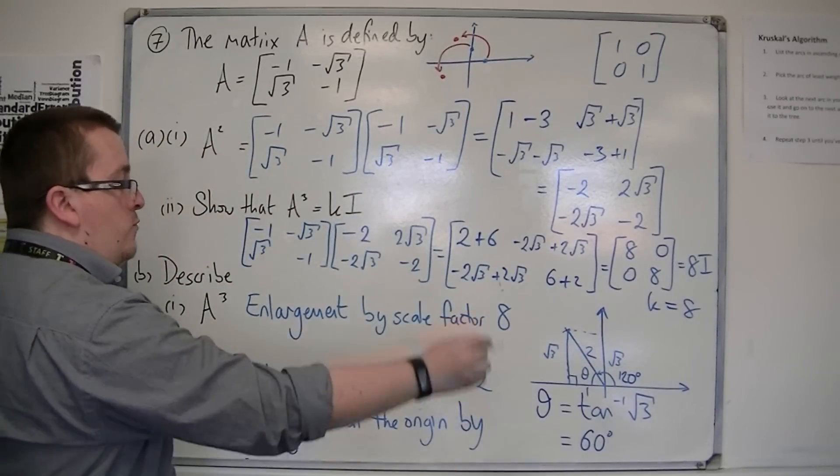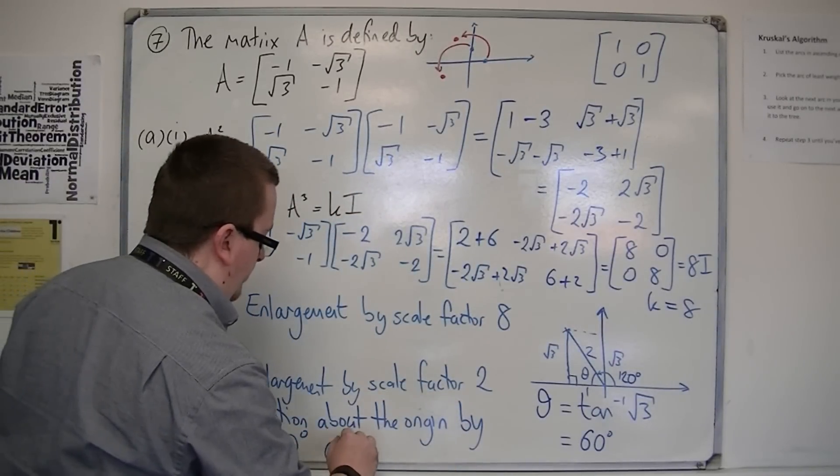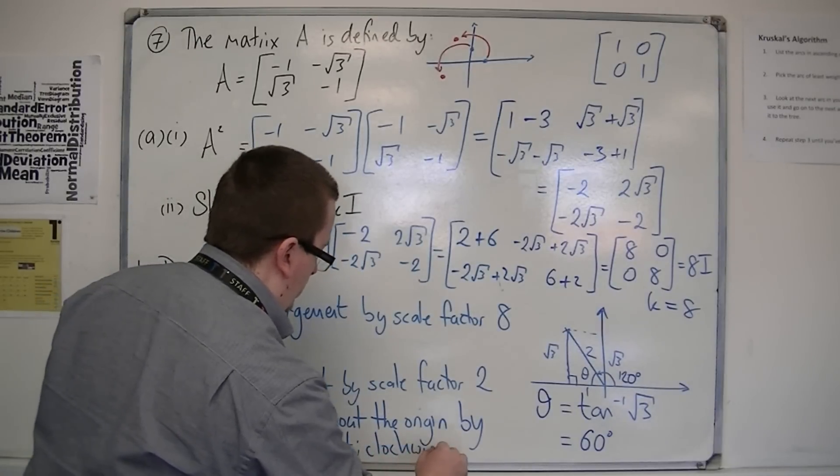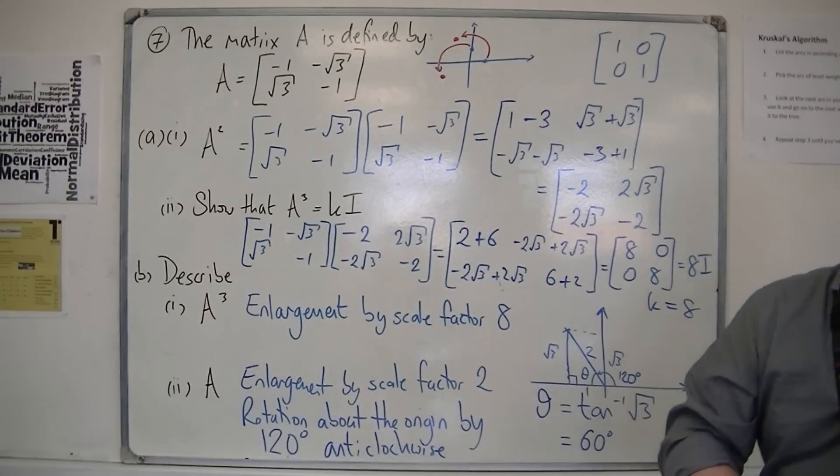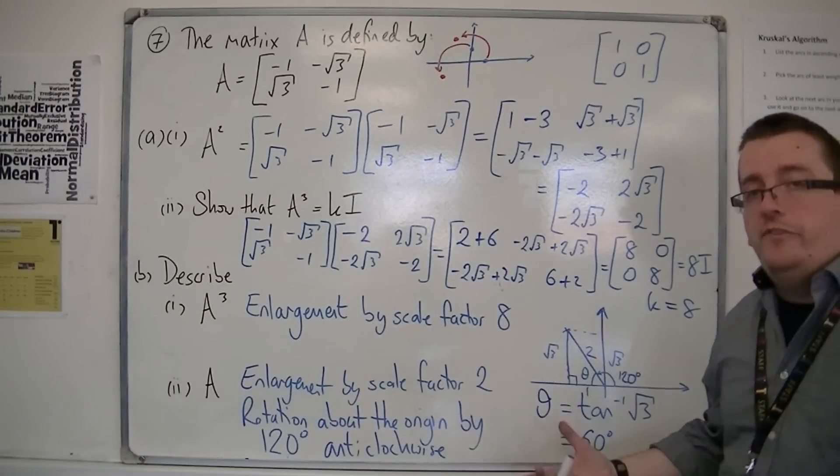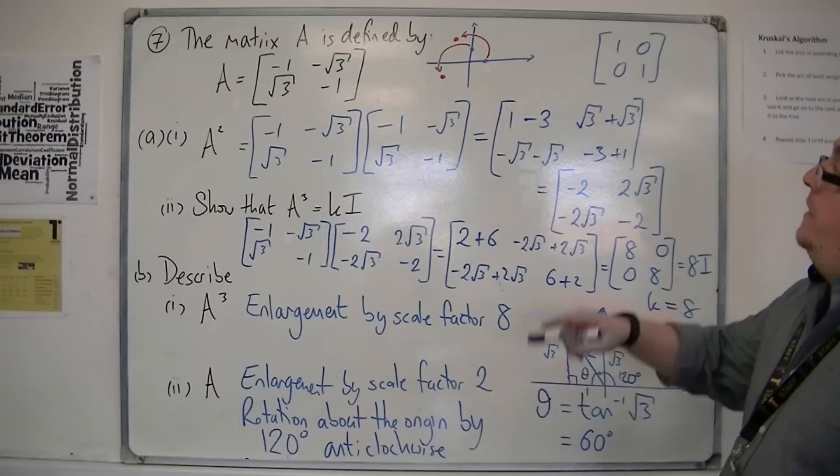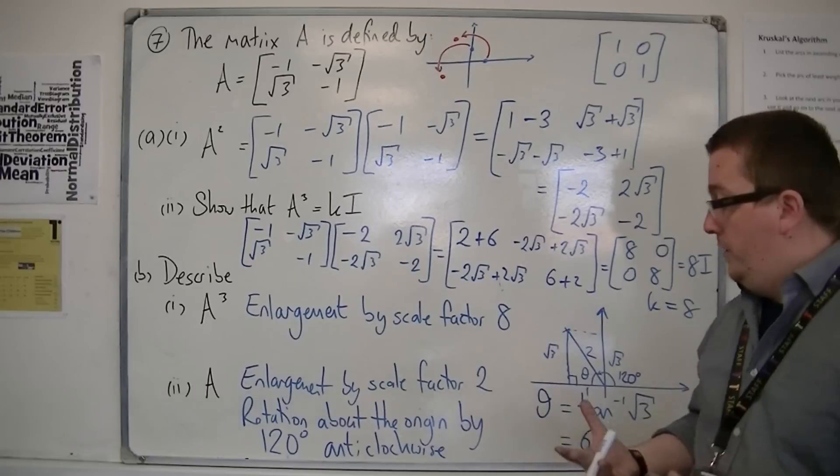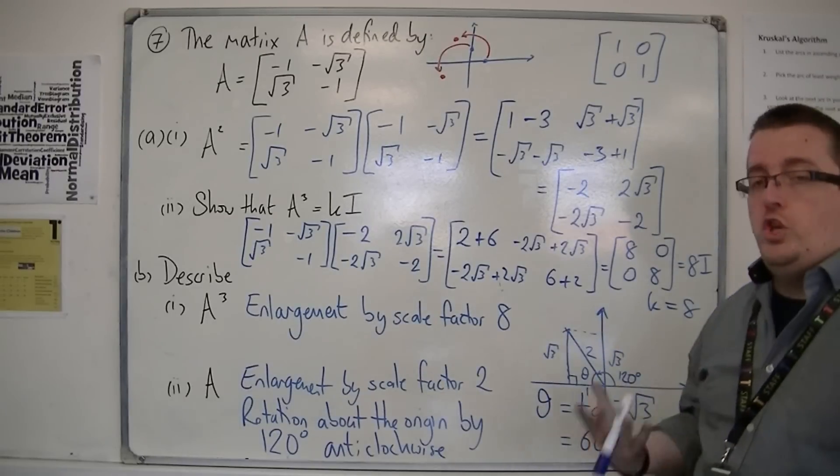So, this is a rotation about the origin by 120 degrees. And, we're going this way around, so anti-clockwise. So, that is how you can do it. There are different ways of doing it. But, I like to draw a little diagram, determine where the points have moved to, and do it geometrically.